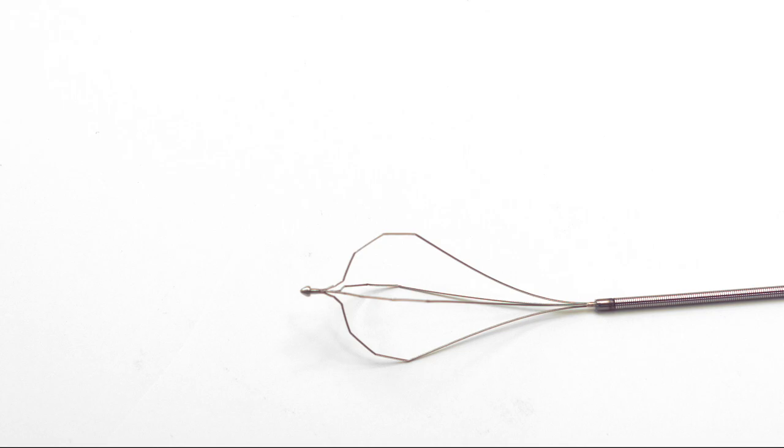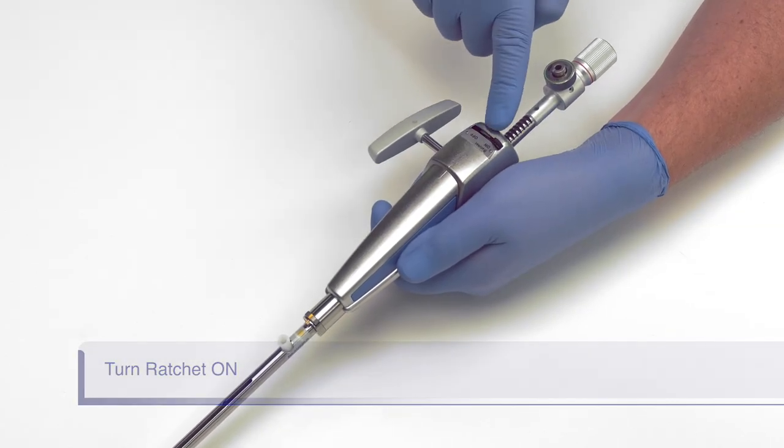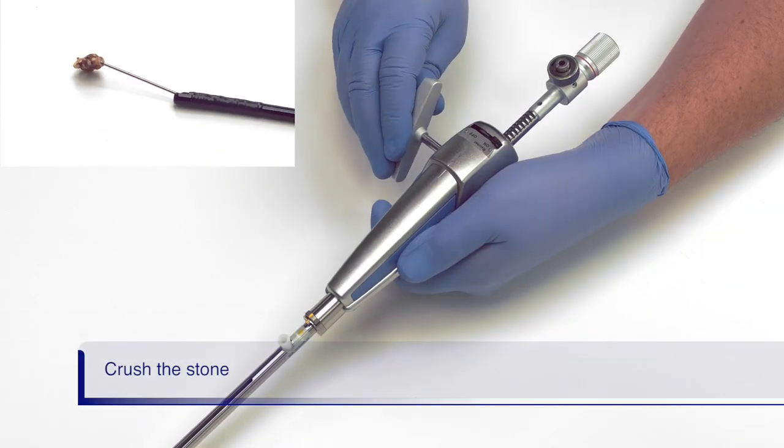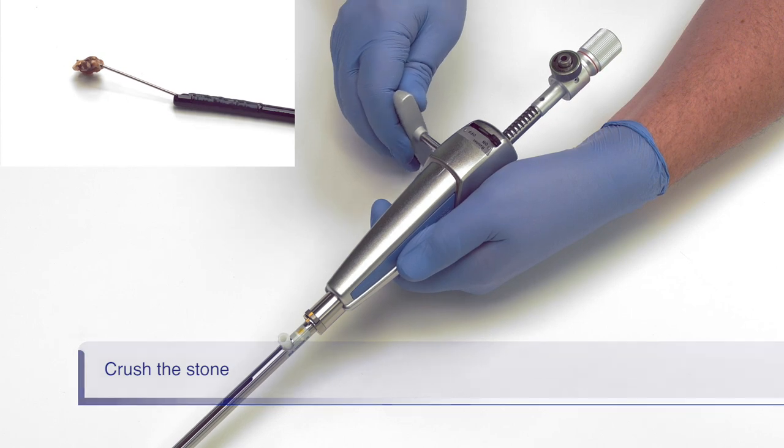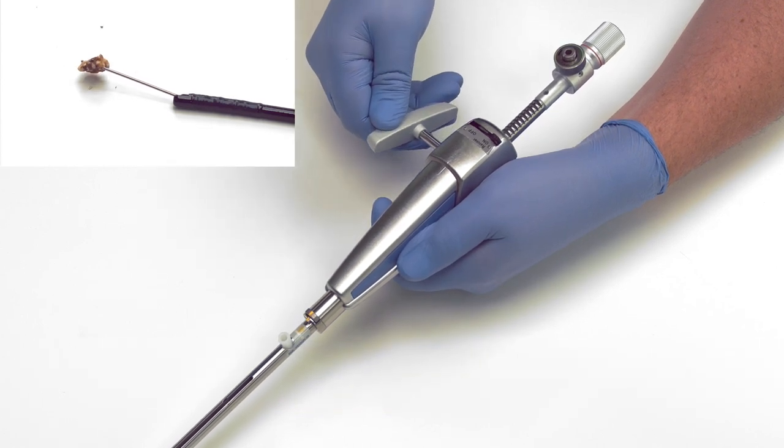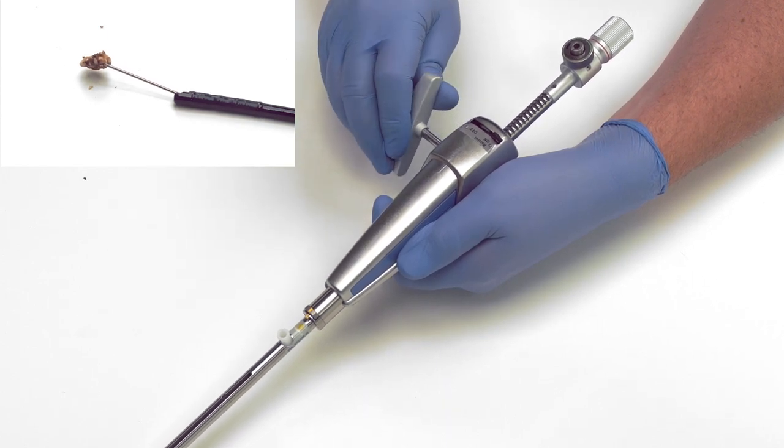Now we can crush the stone. Push the ratchet switch into the on position. Slowly turn the handle to close the basket around the stone and eventually crush the stone. It is important to turn no faster than you see here or the stone can slip out of the basket.